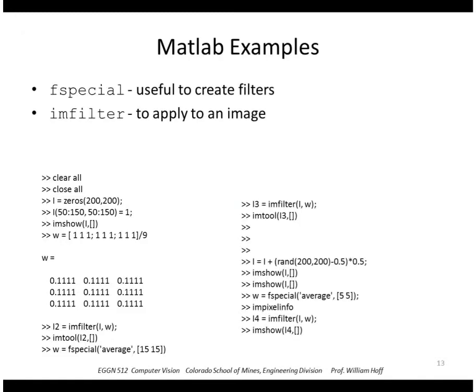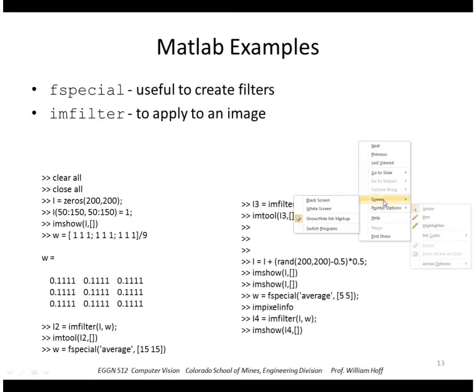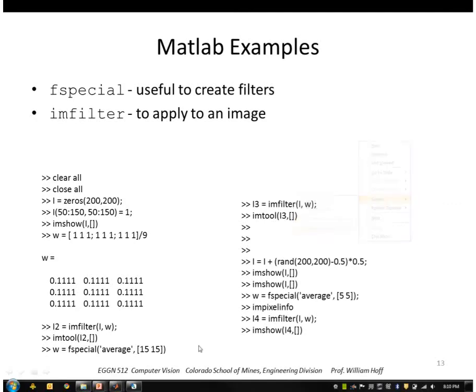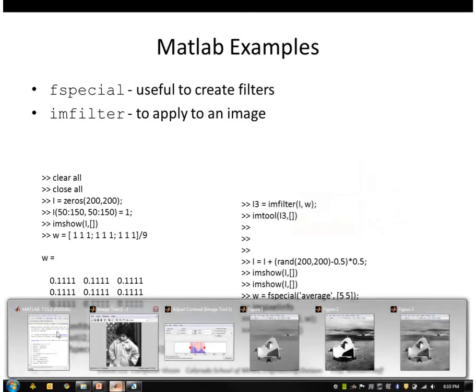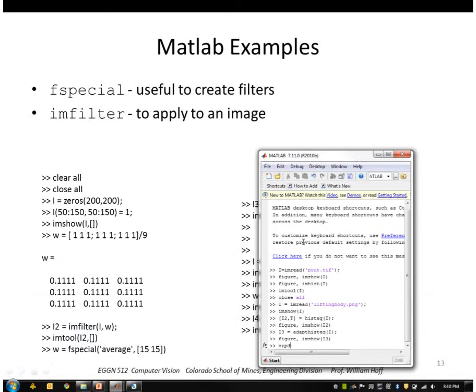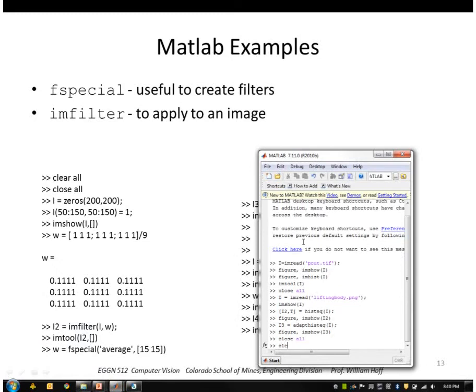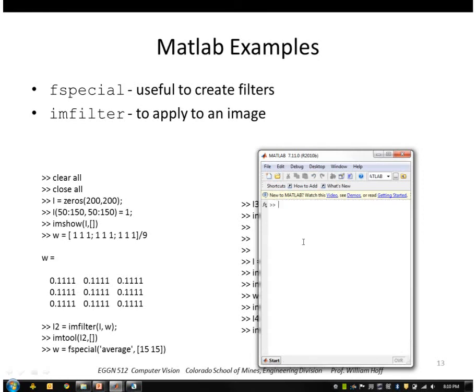I'll show you an example in MATLAB. Let me go back to MATLAB here. Okay, so I'm going to create an image, a synthetic image consisting of all zeros, 200 by 200. And I'm going to put a white square in the middle from 50 to 150, and 50 to 150.